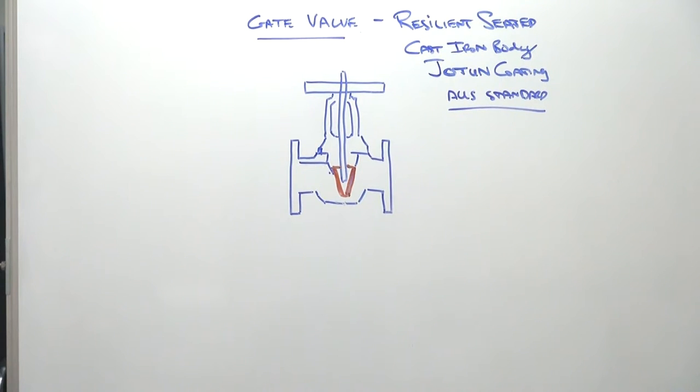Resilient Seated Gate Valves. These sizes are available from 50mm up to 1200mm. They're to Australian standard.